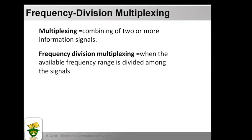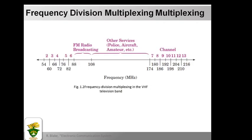One benefit of using modulated carriers, even with channels capable of carrying baseband signals, is that several carriers can be used at different frequencies. Each can carry a different information signal and be separated by filters at the receiver. This is called multiplexing. Frequency division multiplexing (FDM) is when the available frequency range is divided among the signals. A vivid everyday example is radio and television broadcasting, where the available spectrum is divided among many signals.